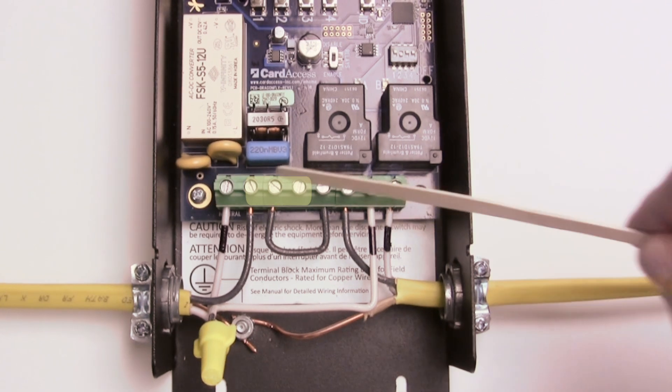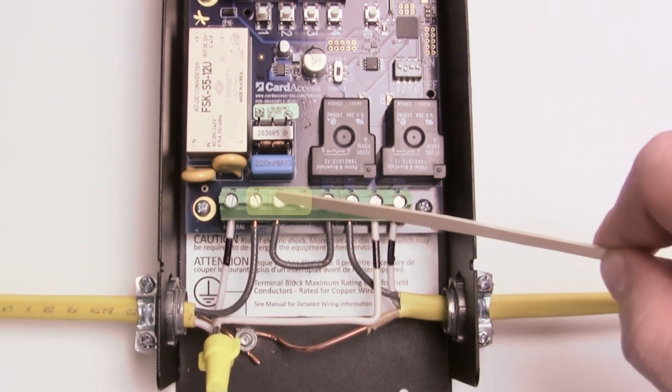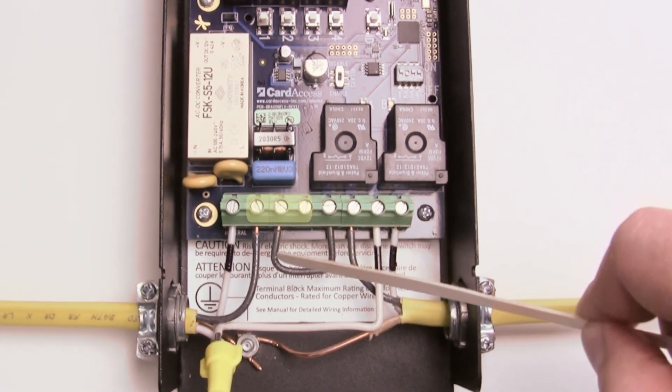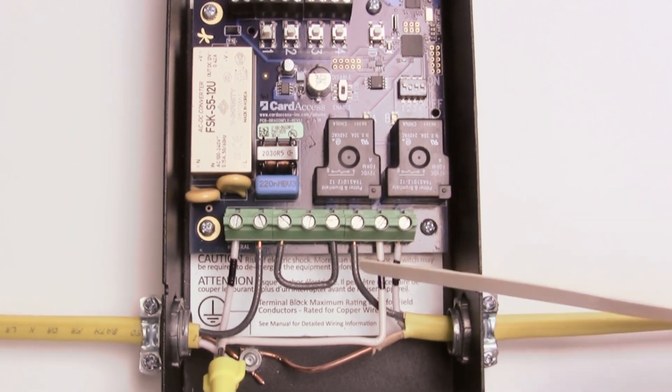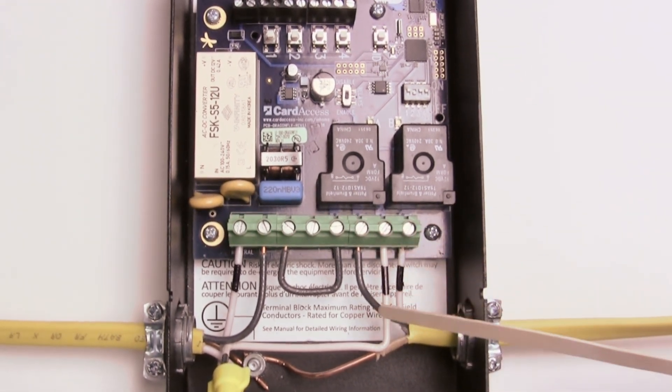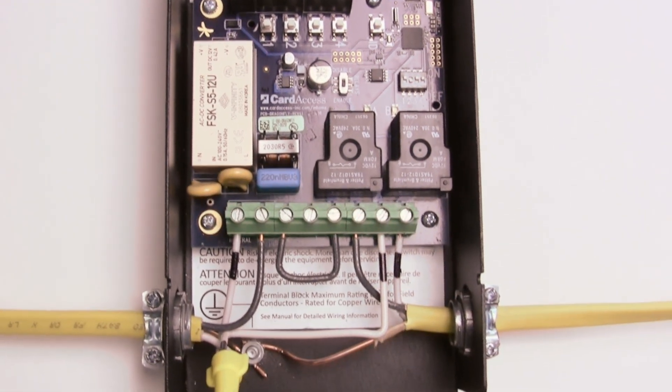And then these three are all the same terminal block so we can run one of these out to one of these to each relay. And then out here they'll both go to the load, which is the opposite side of these relays.